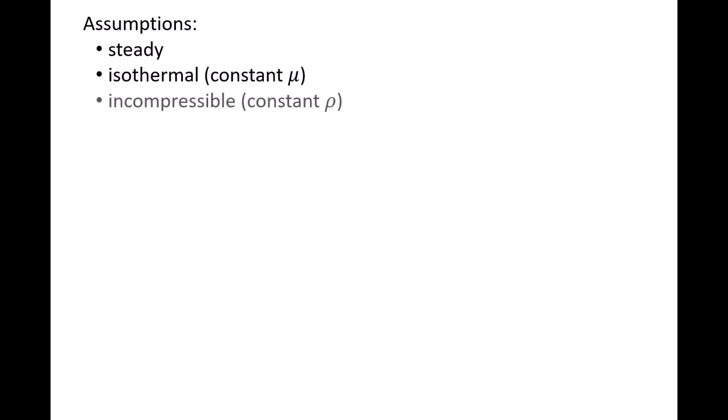The third assumption is the flow is incompressible, resulting in the density being constant throughout the pipe network. This is a good assumption for the flow speeds and pressures typically encountered in many pipe networks.